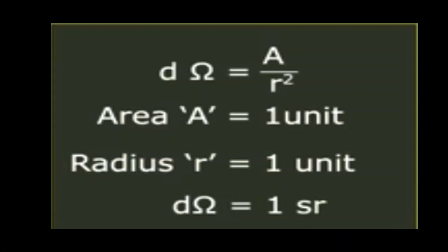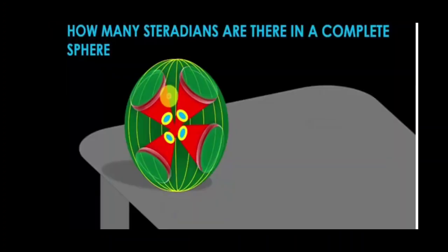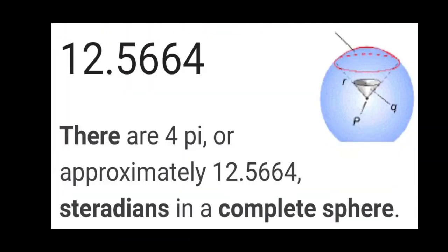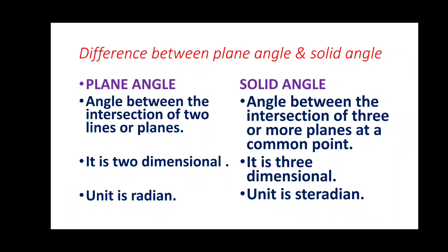A unit sphere has a radius equal to 1 meter and a unit area means the area sustaining the solid angle is equal to 1 meter squared. Just as there are 2π radians in a circle, there are 4π steradians in a complete sphere. 4π is approximately equal to 12.566, obtained by multiplying 4 by π (3.14).